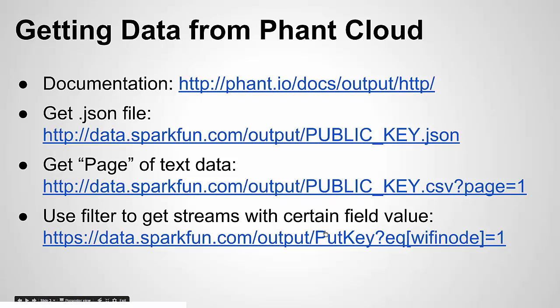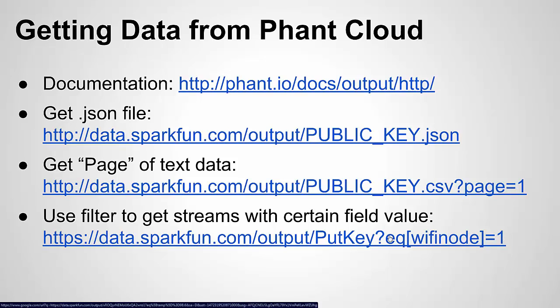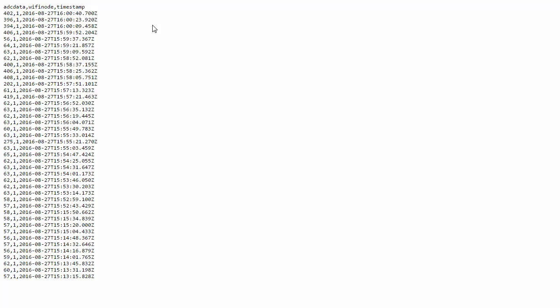Here's an example: after your key you add a question mark, then EQ meaning 'equal to', then state your field. So I state my field as 'Wi-Fi node' and set it equal to one. When I put this in the web browser, all the data from node one shows up and not from node two — changing it to two gives node two. Looking at a quick example in the browser: it grabs the field headings, the timestamp heading, and all the data for Wi-Fi node one. This is all comma-separated, so when we display the information we want in the app, we have to parse through it and grab the relevant values.